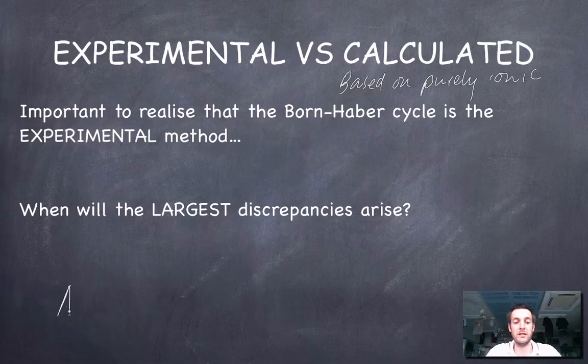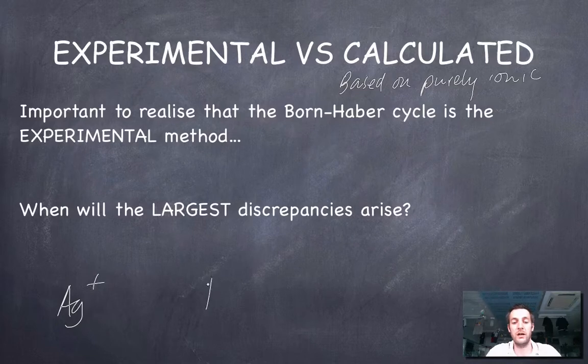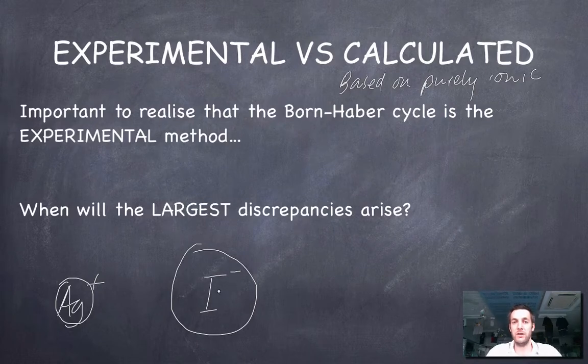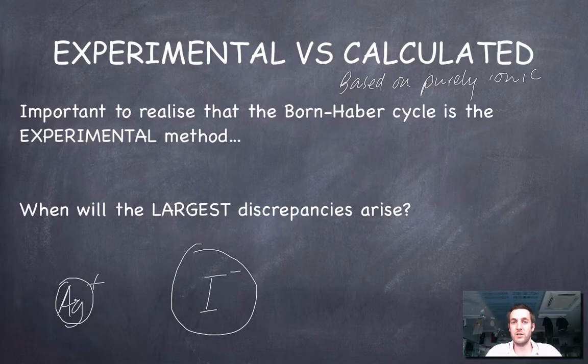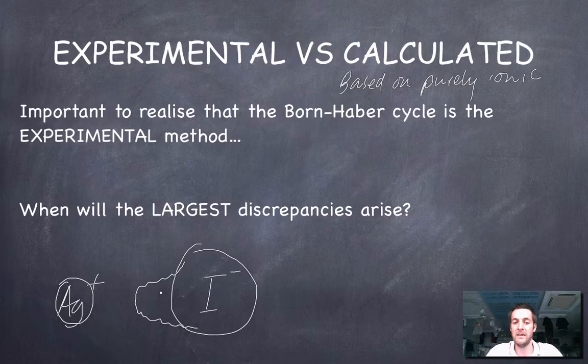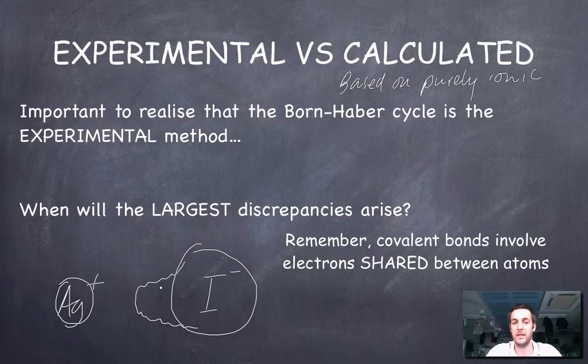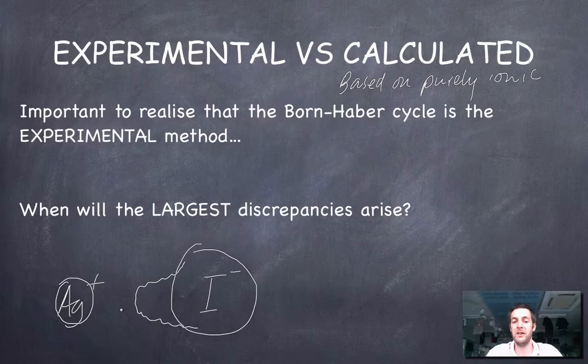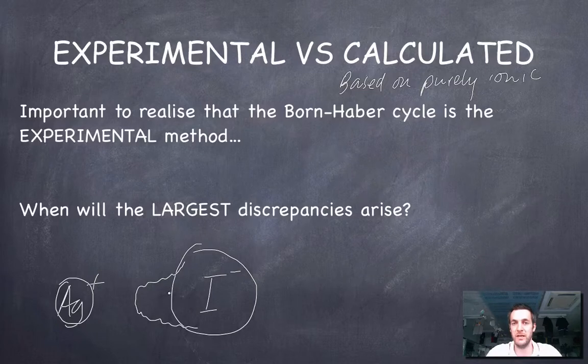And what we can be asked to do in an IB exam is to compare this experimental value that we've found from a Born-Haber cycle with a calculated value. And sometimes we find that they're quite different. Now, it's important to realize that the calculated value is based on purely ionic bonding. Now, this means that if an atom, like a silver atom, were to give an electron to an atom like iodine and form a great big ion, like an iodide ion, and a very small ion, like a silver ion, if it was purely ionic bonding, then this electron would remain completely in control of the iodine, or the iodide ion. But because this ion is quite small, and because it can pull some of this electron density back towards it, it can distort this ion here. These electrons that are on the iodide ion can end up kind of in the space between these two ions, and now this ionic bond takes on some covalent character.